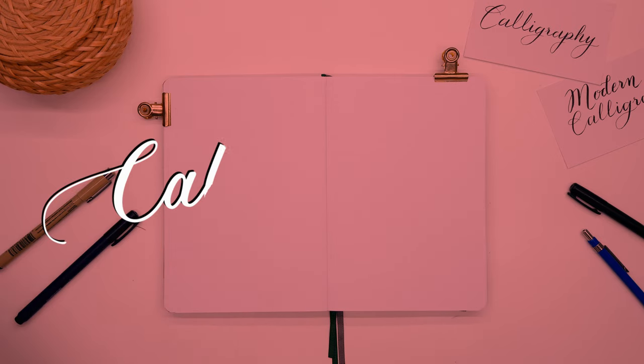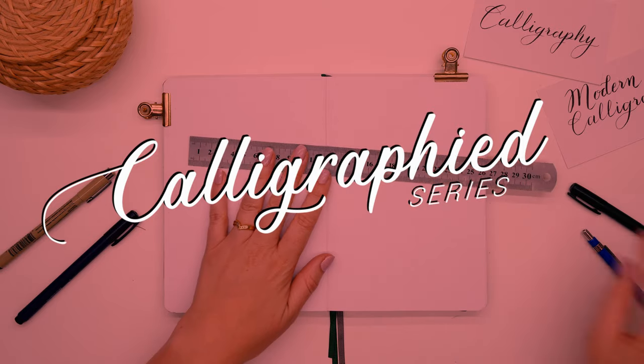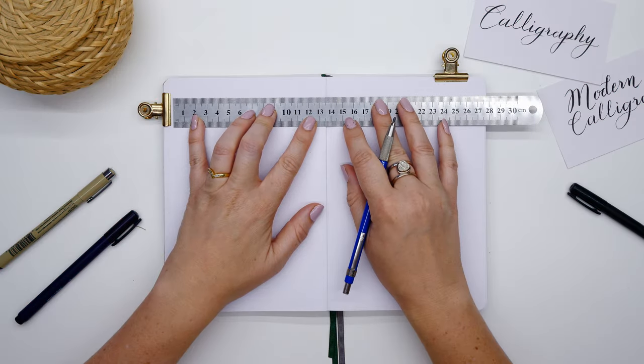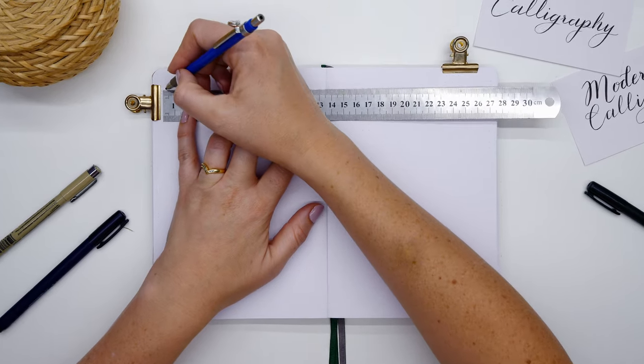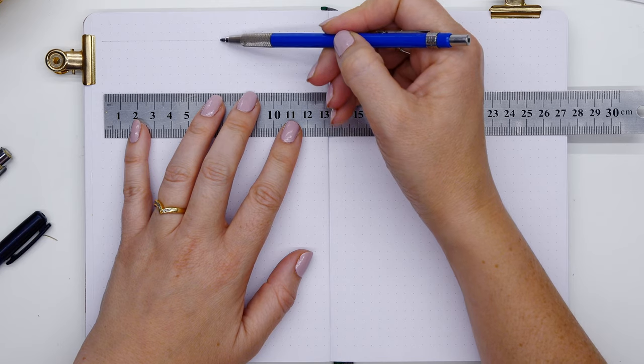A couple of tools I'm using today is just a ruler, my bullet journal, a pencil, and a brush nib. If you don't have a brush pen you could just use a soft pencil like a 2B or a 4B. That would just help with getting your downstrokes to be nice and thick.